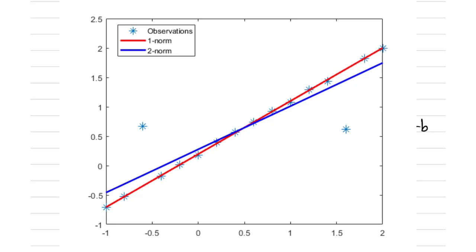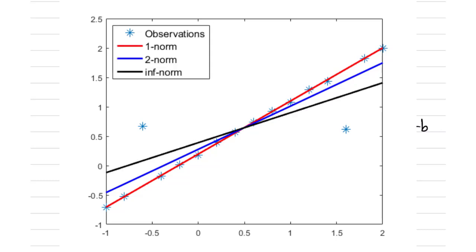The effect of using L1 norm is that the final fit is good for all the points except for the outliers, while outliers affect the L2 norm fit to a larger extent. The L infinity norm fit, shown by the black line, is tilted even further to take into account the two outliers, as it is affected by outliers to the largest extent. It focuses entirely on the observation with the largest residual.